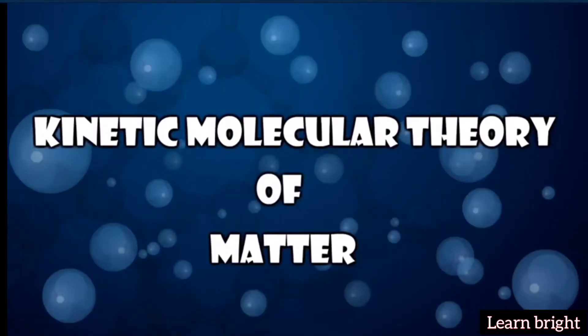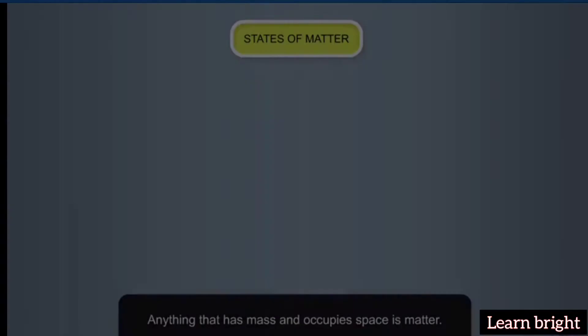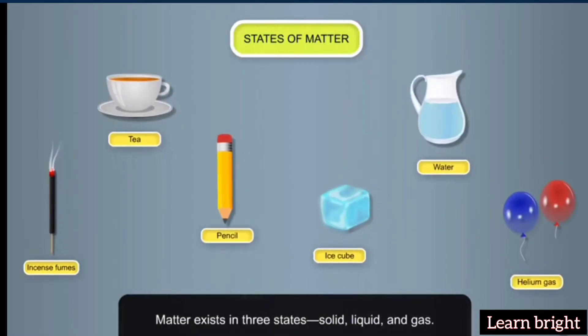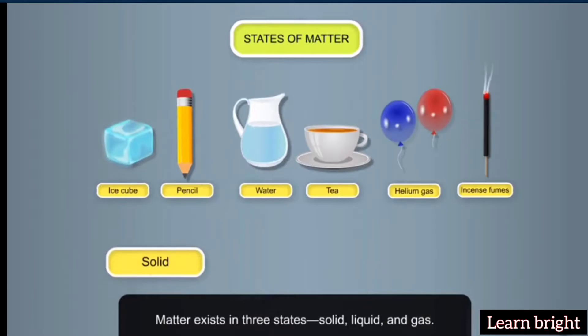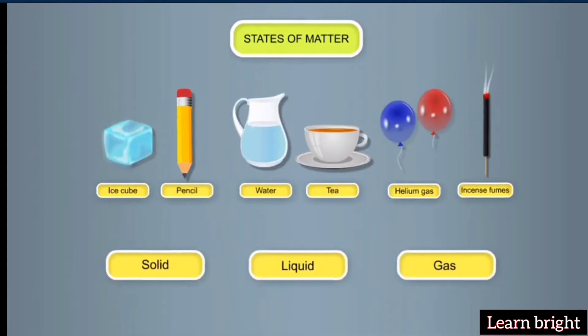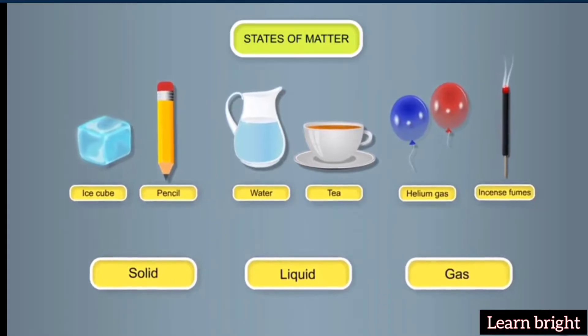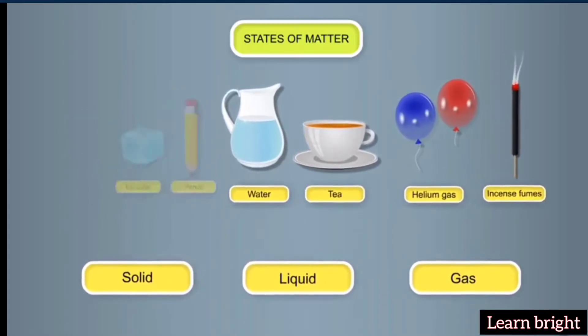Kinetic molecular theory of matter: Anything that has mass and occupies space is matter. Matter exists in three states: solid, liquid, and gas. In this module we will learn about the kinetic molecular theory of matter. It is based on the following postulates.